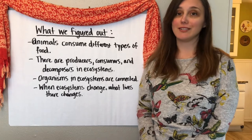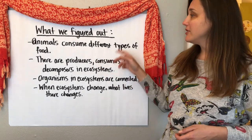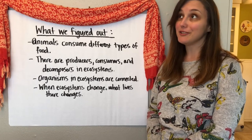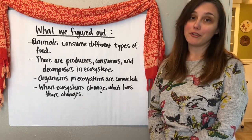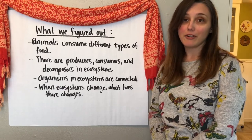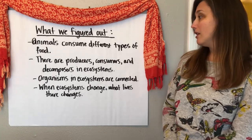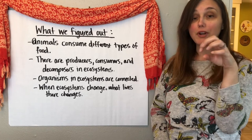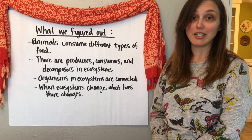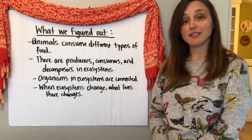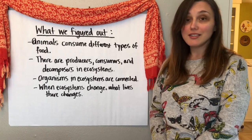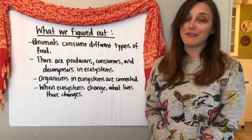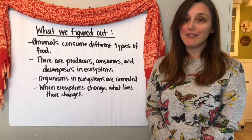Let's go ahead and review all the things that we discussed today. We learned that animals consume different types of food — the swallowtail caterpillars consume fennel, but the blue jays consume the swallowtail caterpillars. There are producers, consumers, and decomposers in ecosystems — fennel is a type of producer and caterpillars and blue jays are types of consumers. Organisms are connected in an ecosystem, and when you remove or add something from a food chain it impacts the other parts of the ecosystem. And when ecosystems change, what lives there changes. Thank you so much for joining me, and I hope that you had fun — always keep noticing and wondering. Remember, that's the most important thing that you can do.